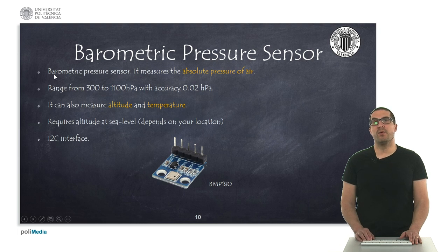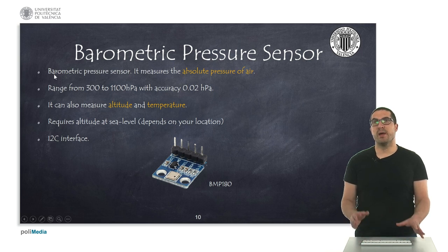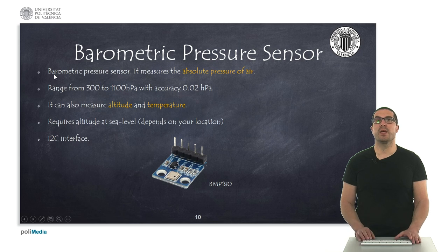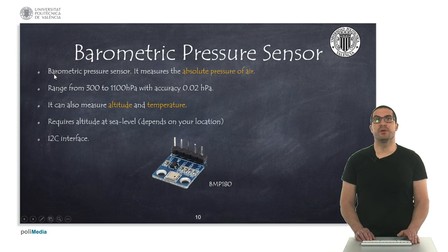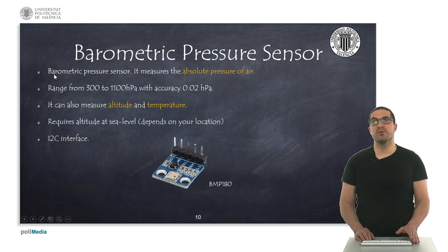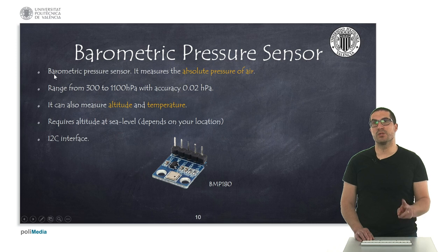Then we have the barometric pressure sensor, which is able to measure the absolute pressure of air and provides ranges between 300 and 1100 hPa. It also provides altitude and temperature measurements, where the altitude depends on your location. The interesting thing here is that it uses the I2C interface, so it uses basically just two signals.